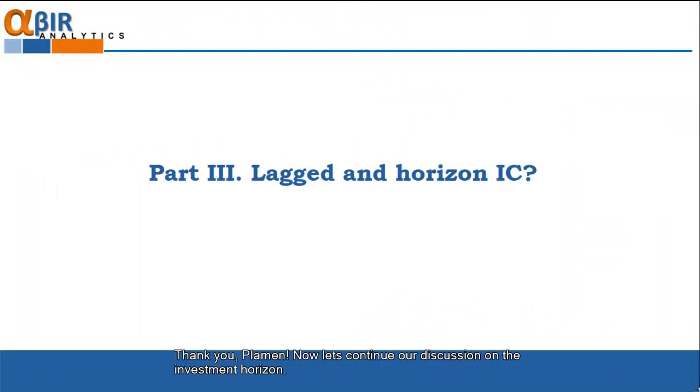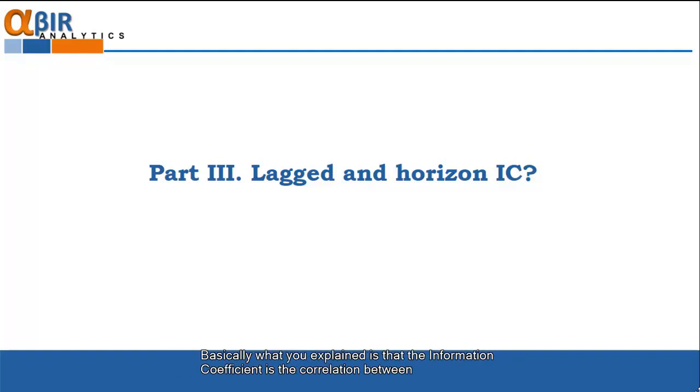Thank you Roman. Now let's continue our discussion on the investment horizon. Basically, what he explained is that the information coefficient is the correlation between the initial forecast at the starting of the period, let's say January 1st, and the subsequent return in the period, let's say January 31st.